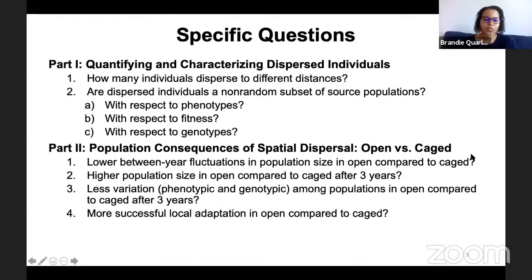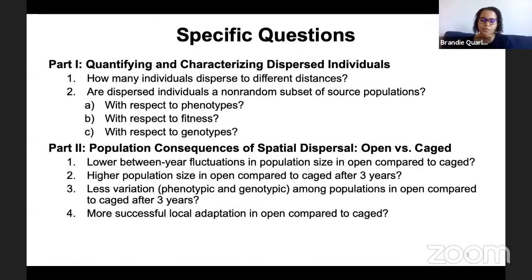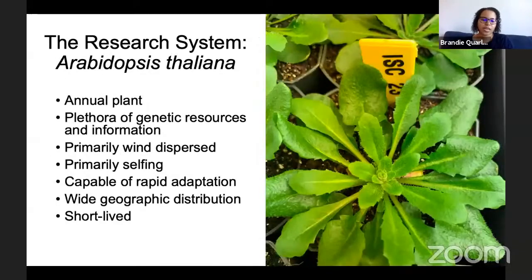For part two, I'm asking: is there lower between-year fluctuation in population size in open compared to caged? Is there higher population size in open compared to caged after three years? Is there less variation among populations in open compared to caged after three years — is dispersal between nearby populations reducing that between-population variation? And if we do find differences in population size or variation, does that also lead to more successful local adaptation in populations open to dispersal compared to closed? To answer these questions, I'm using the research system of Arabidopsis thaliana — an annual plant with a plethora of genetic resources, primarily wind-dispersed, capable of rapid adaptation, and with a wide geographic distribution.